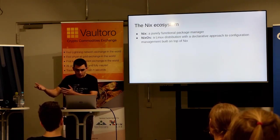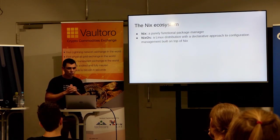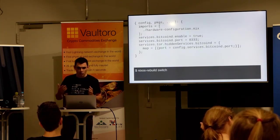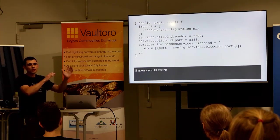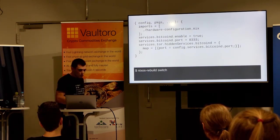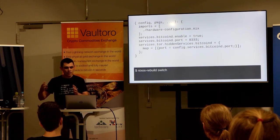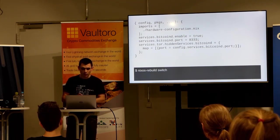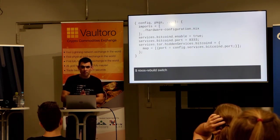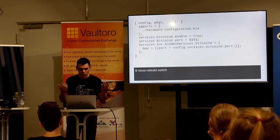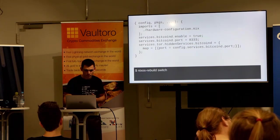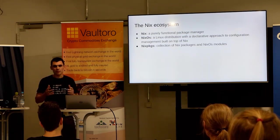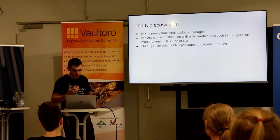Then there's NixOS — this is what runs on the NixBitcoin target. It's a Linux distribution with a declarative approach to configuration management built on top of Nix. So what does declarative approach mean? We've already seen that — this is a configuration.nix. You say Bitcoin D enable true, you set a port for Bitcoin D, and then you say you want a hidden service on that port for Bitcoin D. You run nixos-rebuild switch and your system will reflect that, so you have Bitcoin D running with a hidden service.